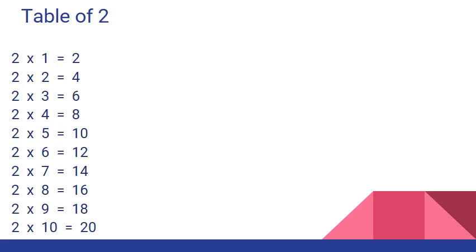Before we end today's session, let us all say together the table of 2. 2 ones are 2, 2 twos are 4, 2 threes are 6, 2 fours are 8, 2 fives are 10, 2 sixes are 12, 2 sevens are 14, 2 eights are 16, 2 nines are 18, 2 tens are 20.